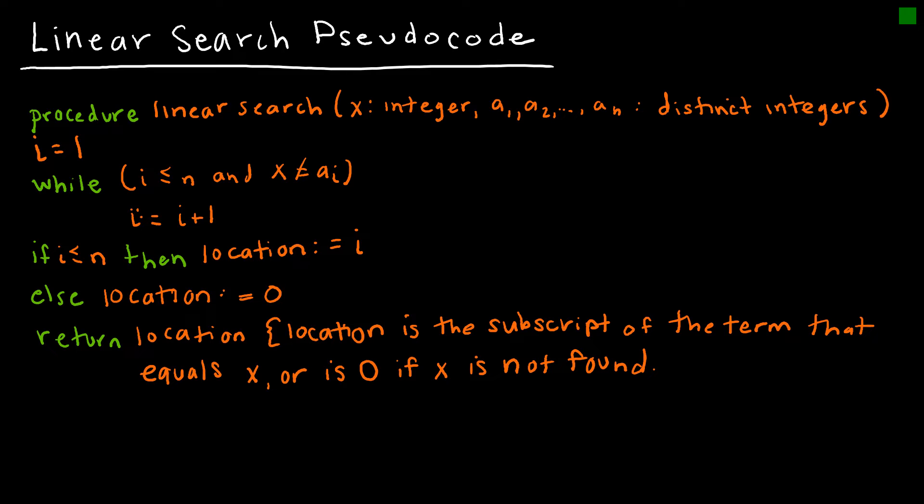Let's look at the linear search pseudocode. First we're going to name the procedure, and I just named it linear search because that's what we're doing. This part is very important because this tells us what values are the inputs. So the inputs are x, and we're looking at the integers a sub 1, sub 2, etc., all the way through a sub n, such that they are distinct integers, so no repeats.